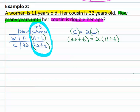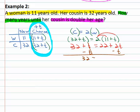And now we have an equation we can solve to find the amount of time by first distributing the two. Simplifying each side, thirty-two plus t equals twenty-two plus two t. Get the variable on one side by subtracting t. Thirty-two equals twenty-two plus t.